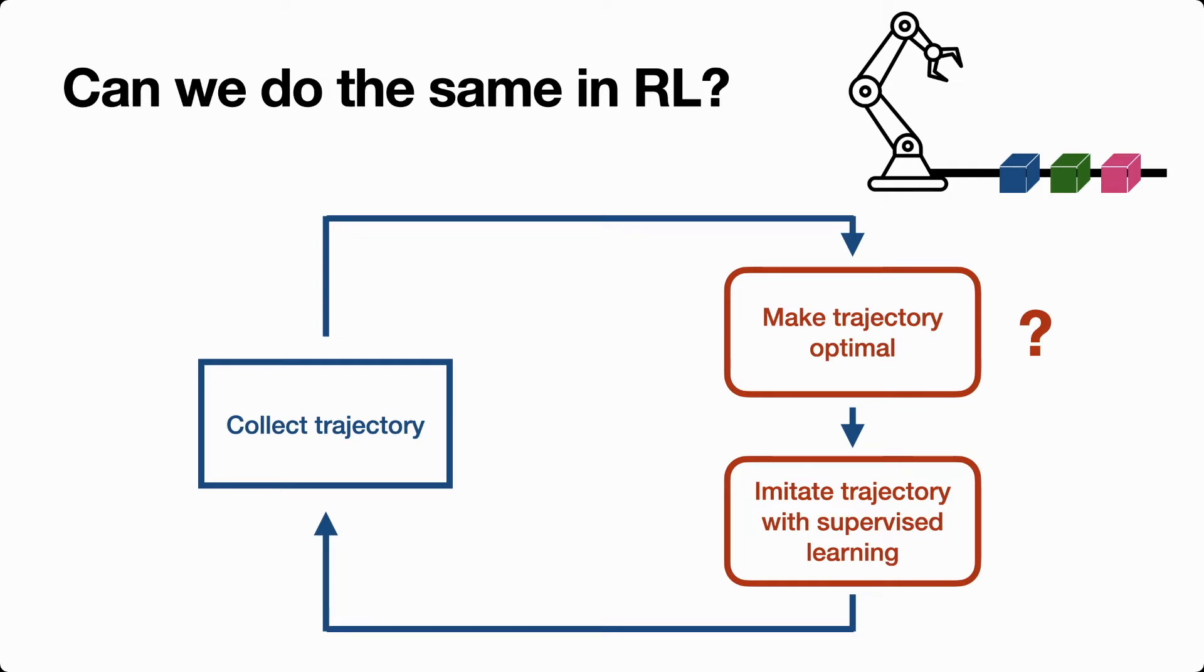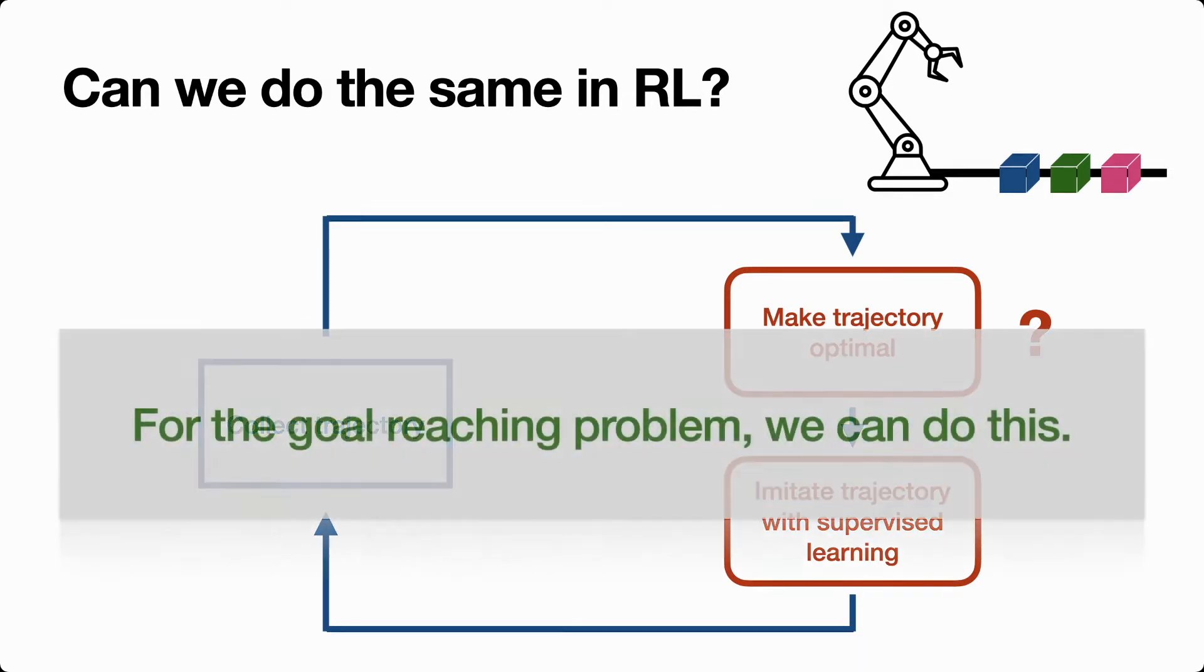Obviously this wouldn't be an interesting talk if this is where it ended. What we're going to show is that for the class of goal reaching problems, this mechanism can actually be efficiently implemented. This leads to an incredibly simple algorithm that follows this exact cycle: collecting trajectories from the policy, modifying them to become demonstrations of optimal behavior, and then imitating this modified experience, continually looping the process.